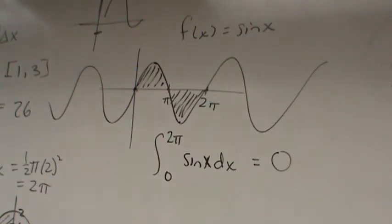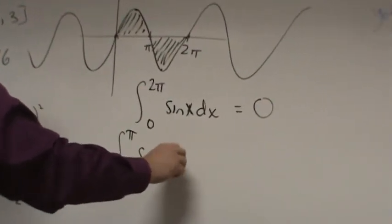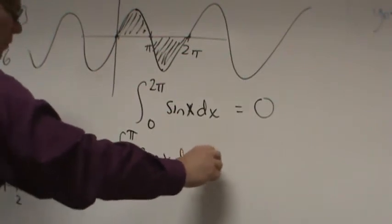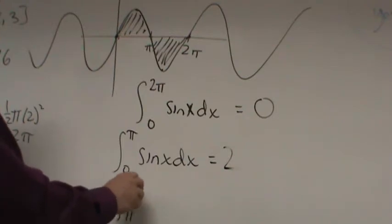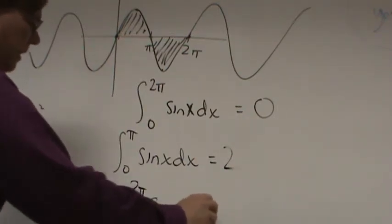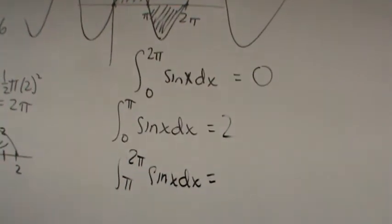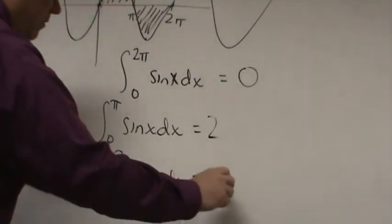What's the integral from 0 to π of sine of x dx? You get 2. And what's the integral from π to 2π of sine of x dx? That's going to be negative 2, because it's that lower portion below the x-axis.